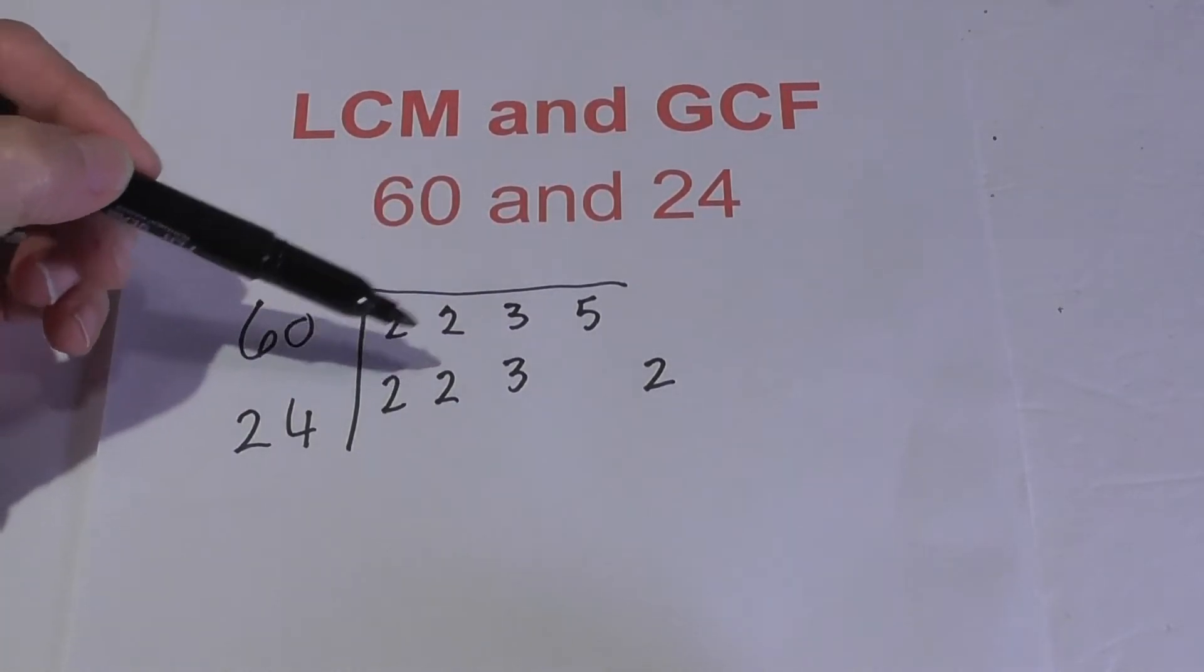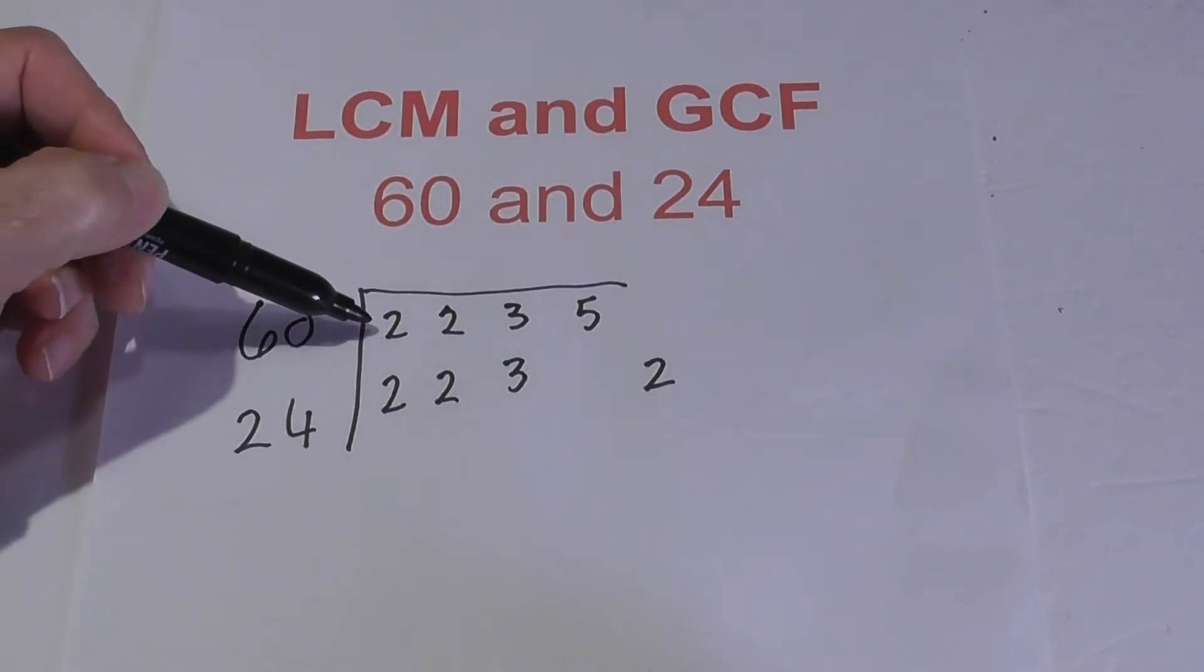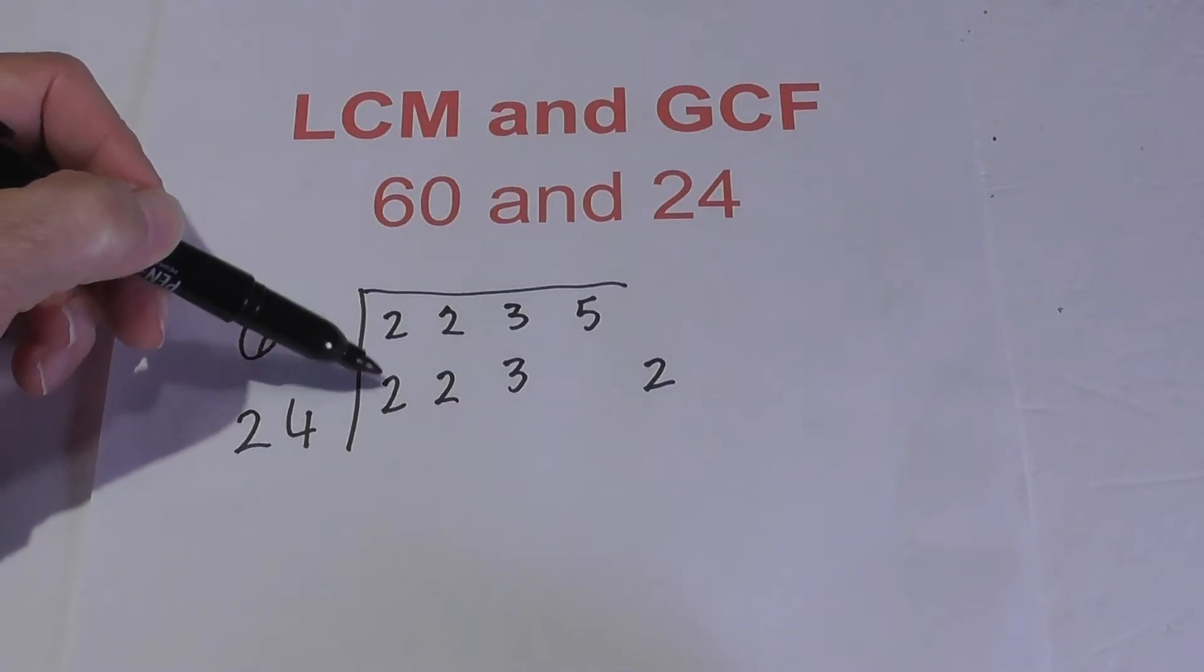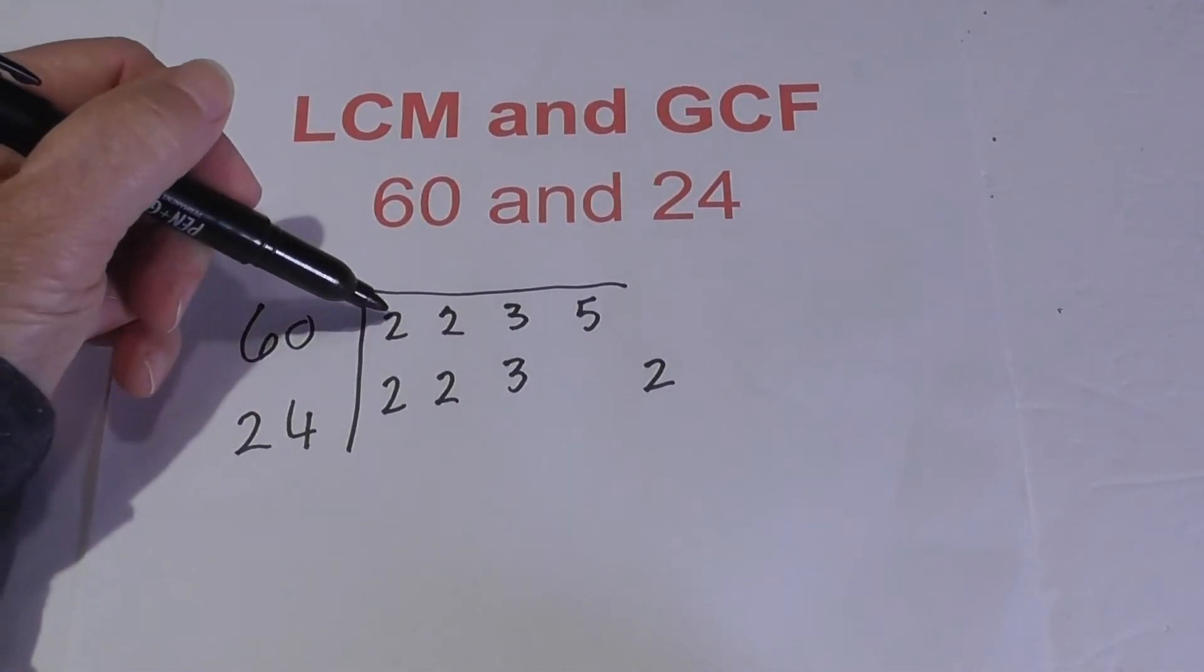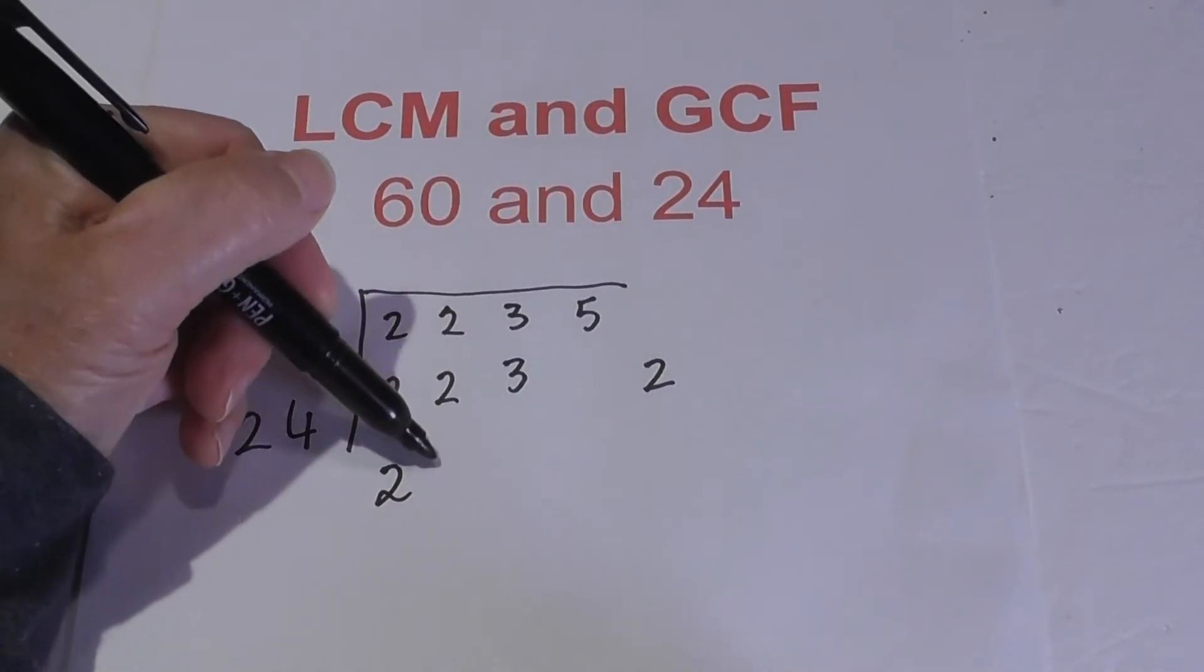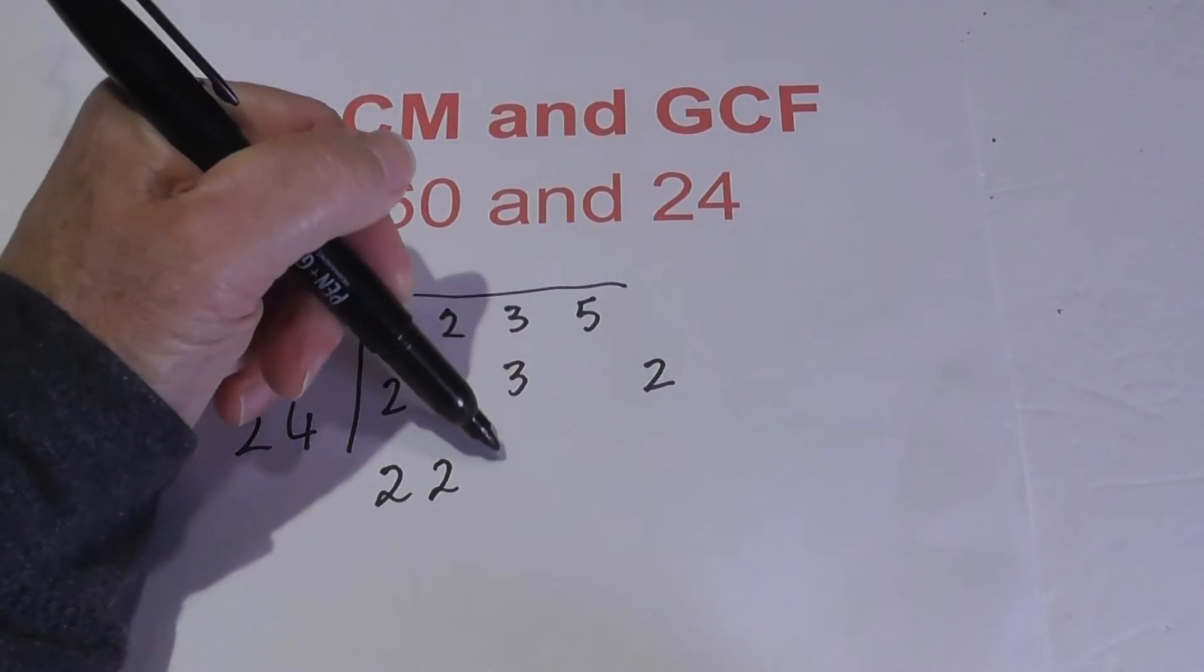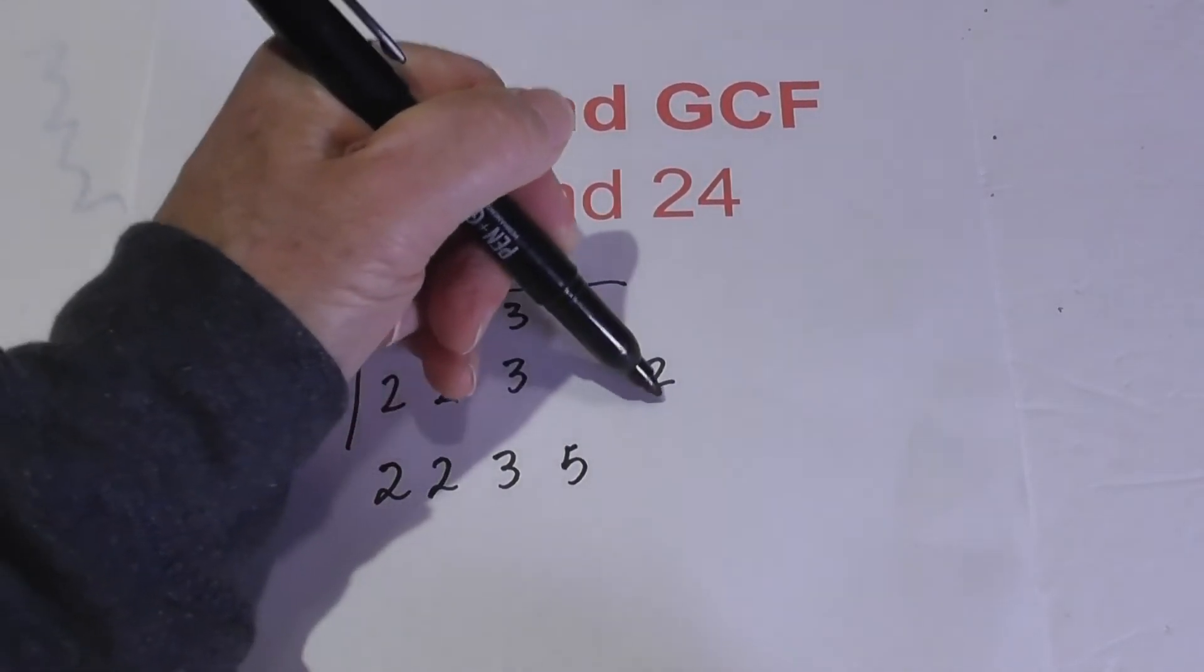For the LCM, you just multiply these numbers together. However, there's one rule: if you have two of the same numbers in a column, then you only bring one down. So we have two here—I'll bring down a 2. Bring down a 2, bring down a 2, bring down 3, bring down the 5, and bring down the 2.